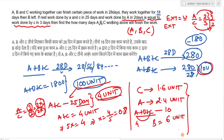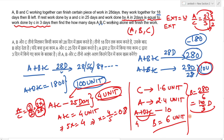Now calculating individual days: B alone will take 280 divided by 6, which equals 140/3 days. C alone will take 280 divided by 1.6, which equals 175 days.